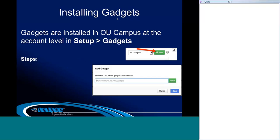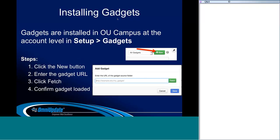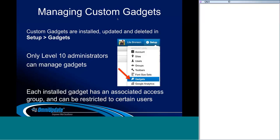To install a gadget, navigate to Setup > Gadgets. Keep in mind that only level 10 users have access to the Setup menu and can install gadgets. Inside Setup Gadgets, click the New button, paste or type your URL in the field, and hit Fetch to load that URL. Confirm it loaded properly without errors, then hit Save to add the new gadget to OU Campus. Only level 10 administrators can set up and manage gadgets.